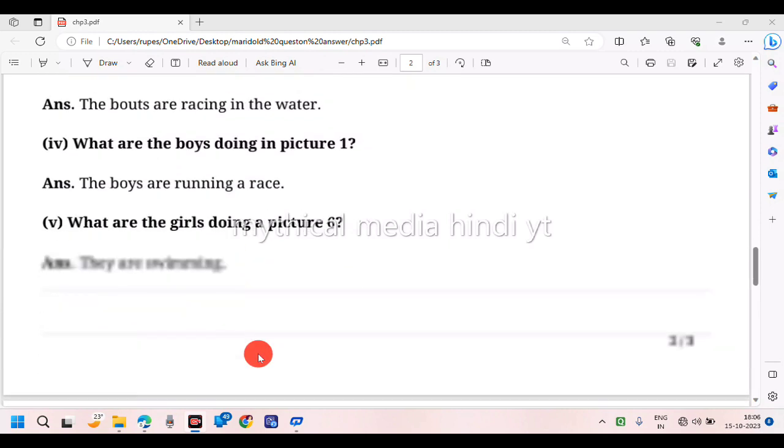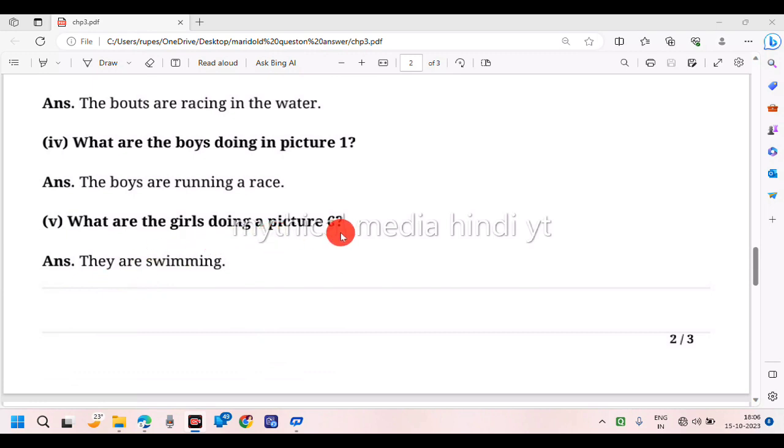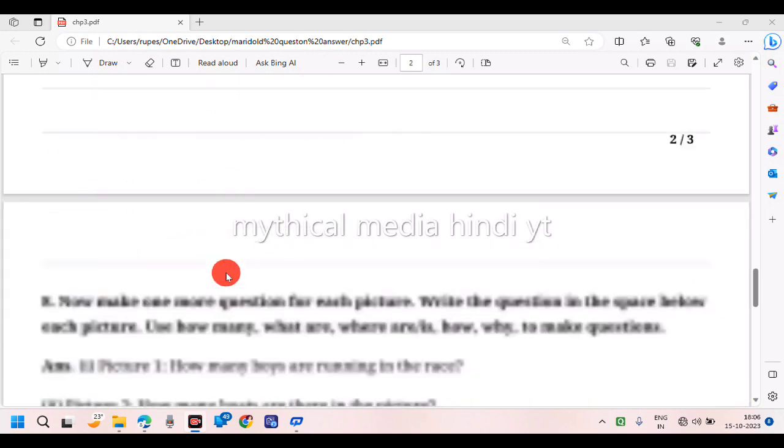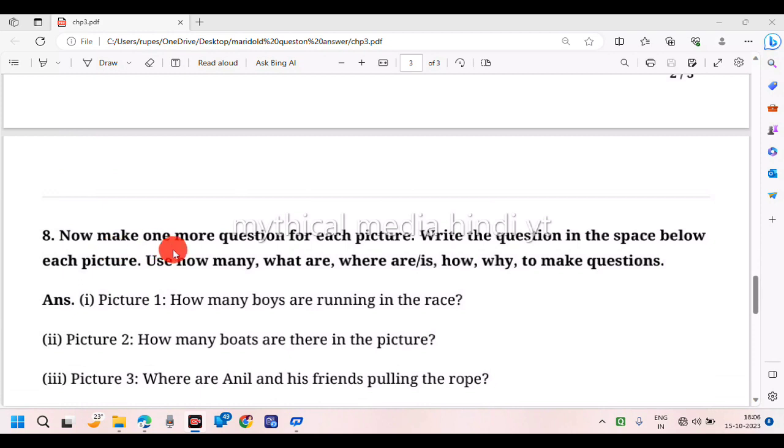What are the girls doing in picture six? They are swimming. Now make one more question for each picture. Picture one: How many boys are running in the race? Picture two: How many boats are there in the picture?